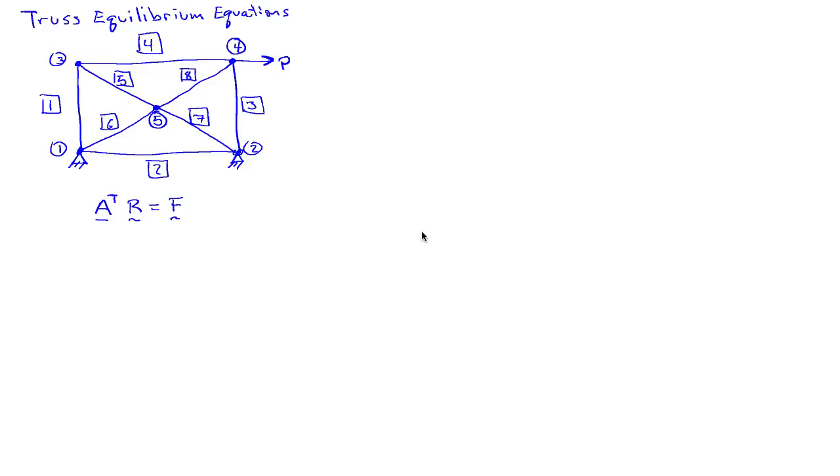In this example, I'd like to look at the development of writing down the equilibrium equations for a truss structure. So I have a truss here, composed of 8 bars and 5 nodes. What I'd like to do is write down the equilibrium equations for this truss. The standard form that we have developed is A transpose R equals F. R is the vector of bar forces, F is the vector of the applied loads, and A transpose is the matrix that encodes all the geometric information about the truss.